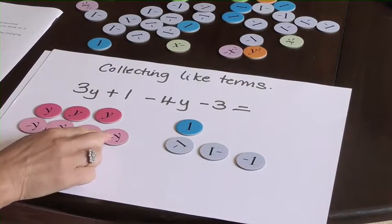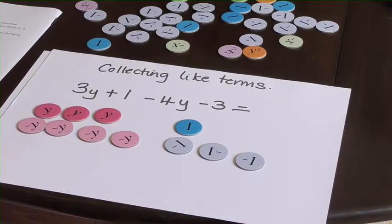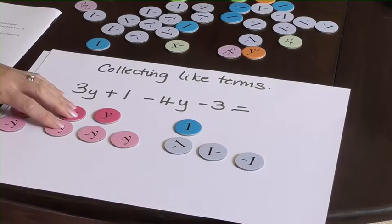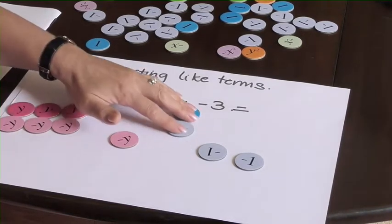So just like before, we'll look for the zero pairs, and then we can ignore them because they're zero. So we've got a zero pair there, and there, and there. And we've got a zero pair here.